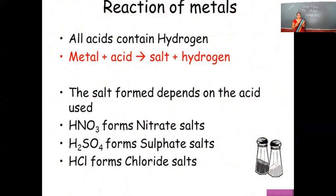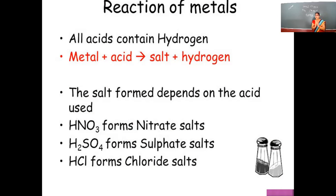Any metal when it reacts with acid will form two main products: salt and hydrogen gas. The salt formed is that of the respective metal. For example, if the metal is sodium and the acid is sulfuric acid, we get sodium sulfate — the respective metal salt — plus hydrogen gas (H₂). Hydrogen gas is the main important product in this reaction.